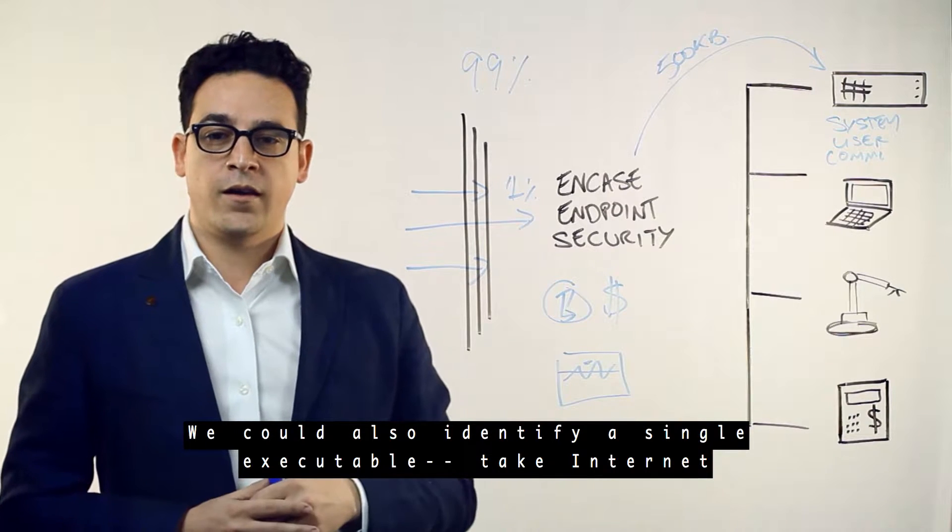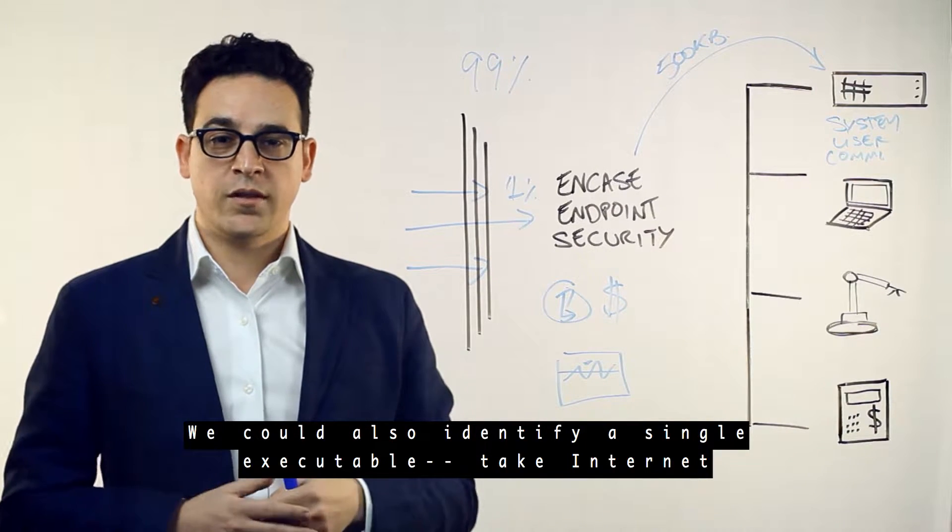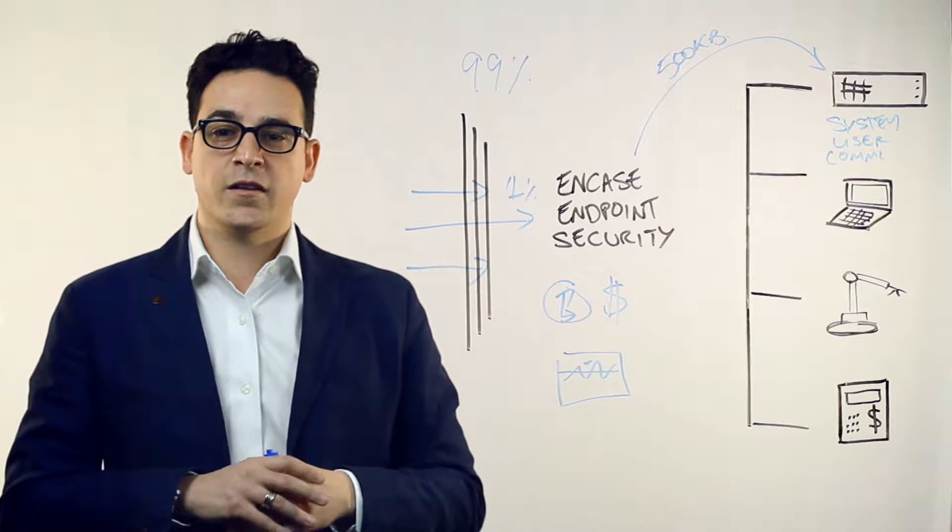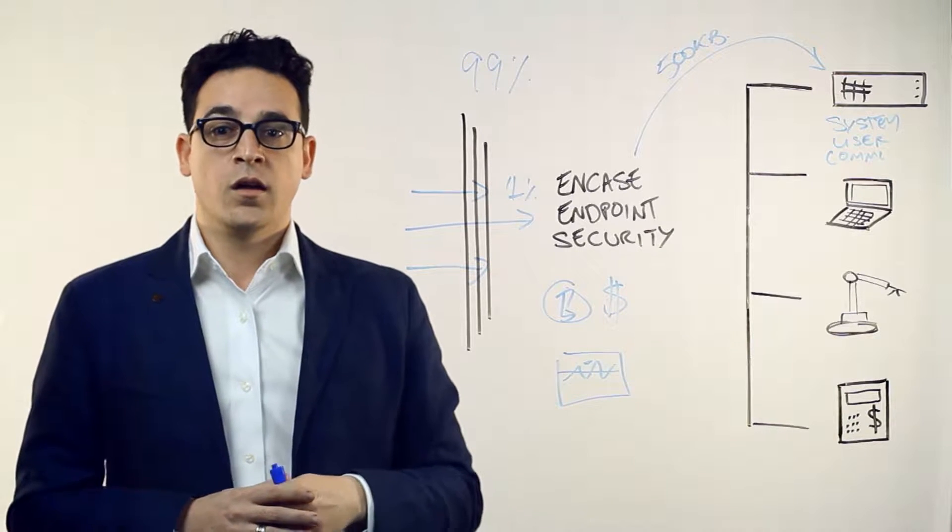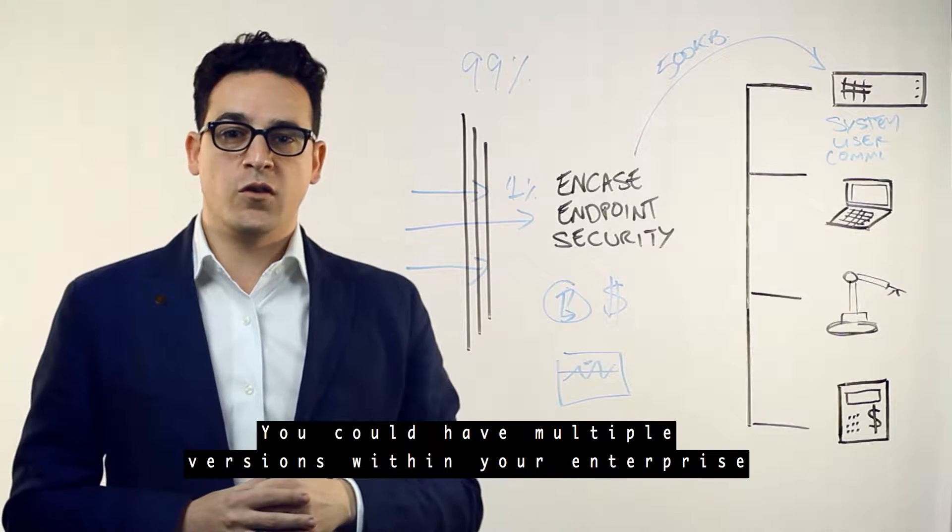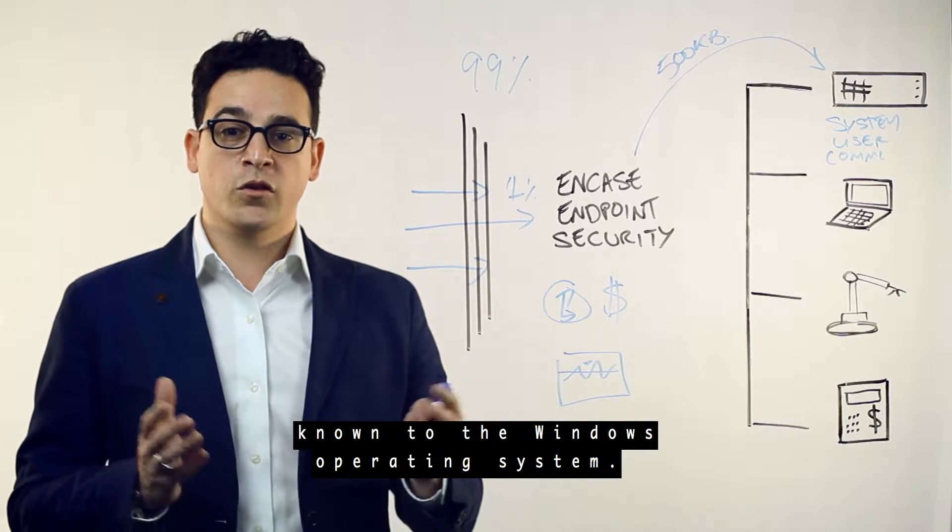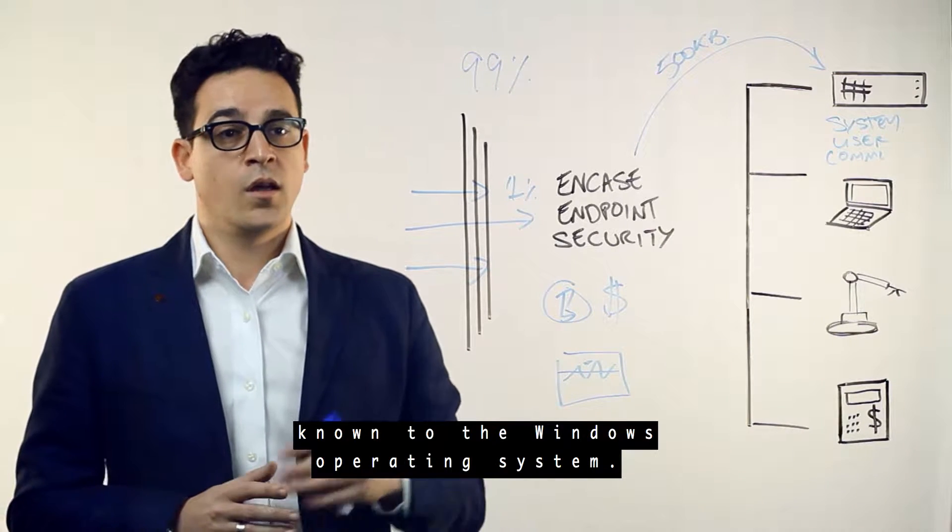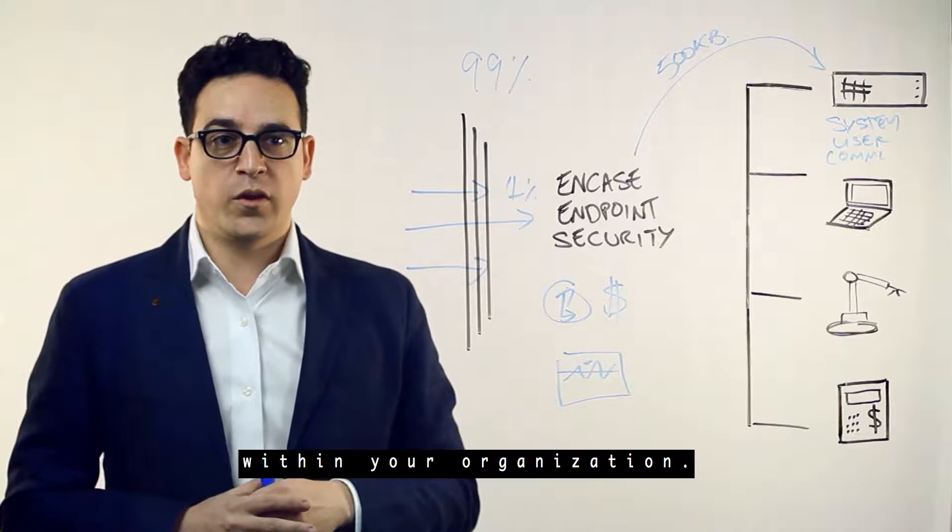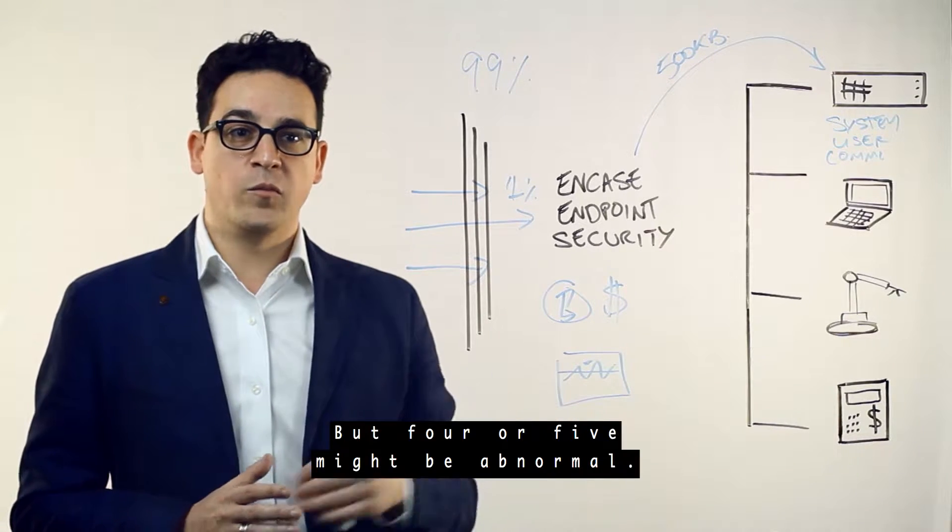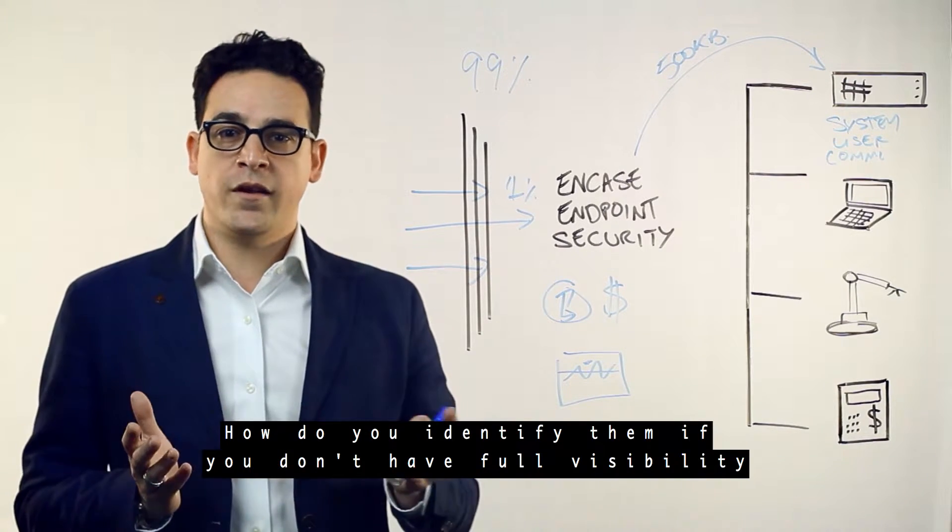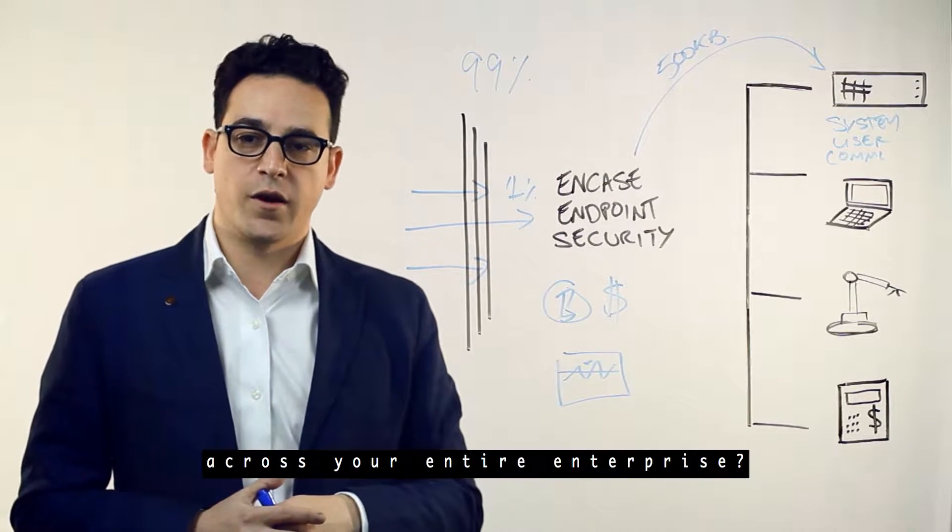We could also identify a single executable. Take Internet Explorer or iExplore.exe. You can have multiple versions within your enterprise of this one single executable that's known to the Windows operating system. A number of three might be normal within your organization, but four or five might be abnormal. How are you to identify them if you don't have full visibility across your entire enterprise?